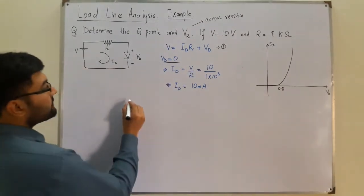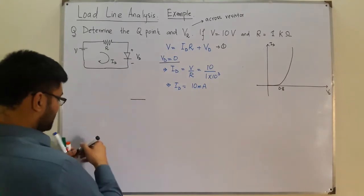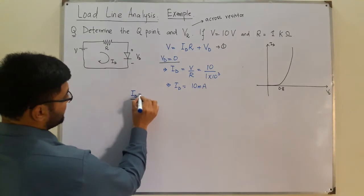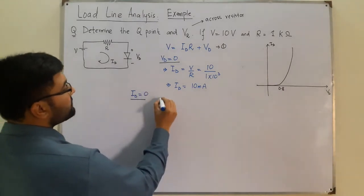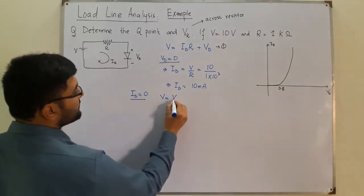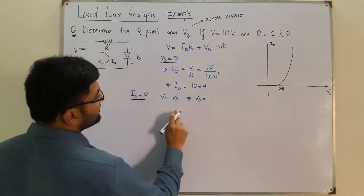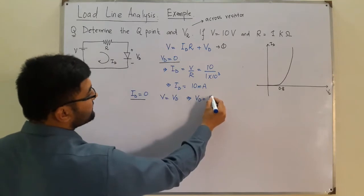So ID equals 0. What happens? V would equal VD, which means VD equals V, which is equal to 10 volts as given.